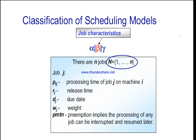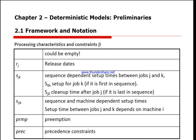Moving to beta: we have what's known as release dates r_j — the earliest time a job can be put on the system. We also have sequence-dependent setup time s_jk, which denotes the setup time for job k when job k follows job j in the sequence. S_j0 is the cleanup time after job j if it is last in the sequence. If the setup time depends on the machine, the subscript is s_ijk. If s_jk does not appear in the beta field, all setup times are assumed to be zero.